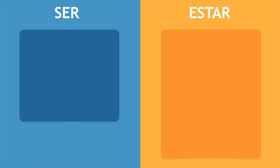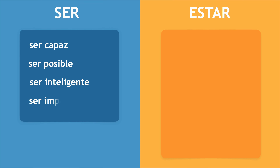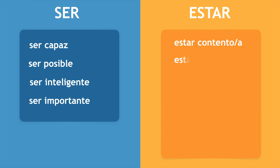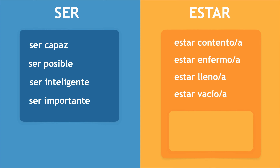Just before we finish, I want to point out that there are some words that can only be used with SER, such as: SER CAPAZ — to be able; SER POSIBLE — to be possible; SER INTELIGENTE — to be intelligent; SER IMPORTANTE — to be important. Or can only be used with ESTAR: ESTAR CONTENTO / ESTAR CONTENTA — to be happy; ESTAR ENFERMO / ESTAR ENFERMA — to be sick or ill; ESTAR LLENO / ESTAR LLENA — to be full; ESTAR VACÍO / ESTAR VACÍA — to be empty. And also two of the most used adverbs: ESTAR BIEN — to be fine, to be okay, to be well; and ESTAR MAL — to be bad, badly, to be wrong, to be sick, to be sad.